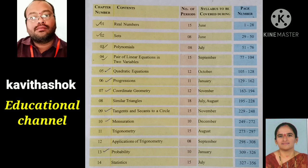Trigonometric ratios of complementary angles. Complementary angles are sin(90 + θ), cos(90 + θ), sin(90 − θ), cos(90 − θ). These values are also complementary angles.